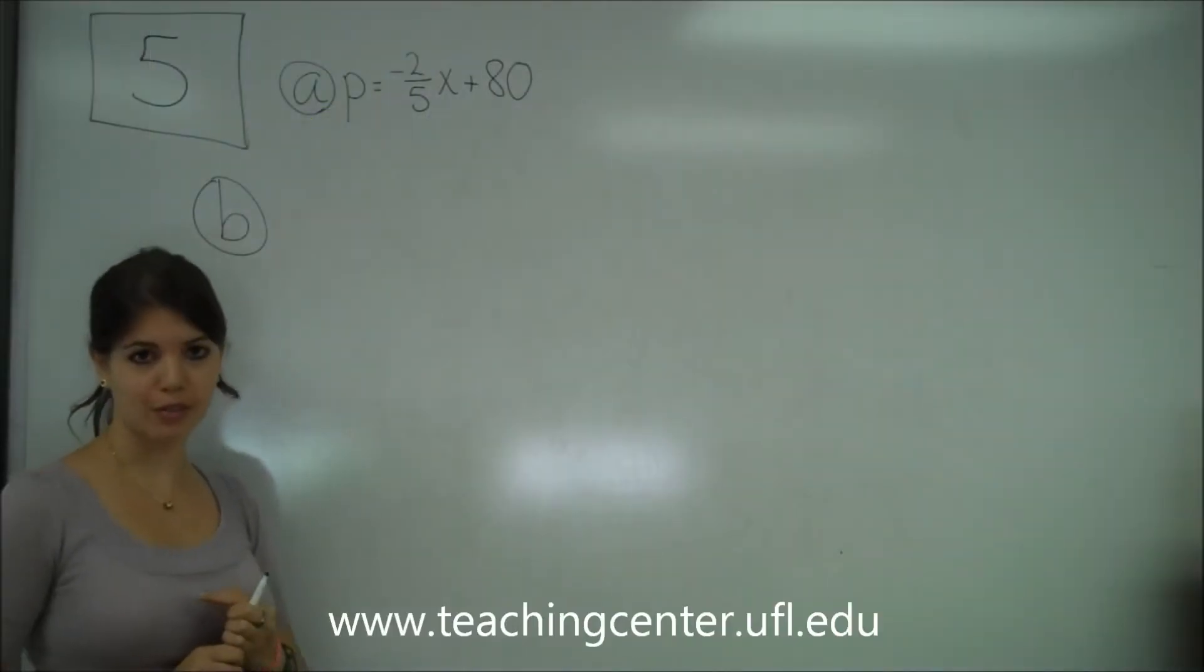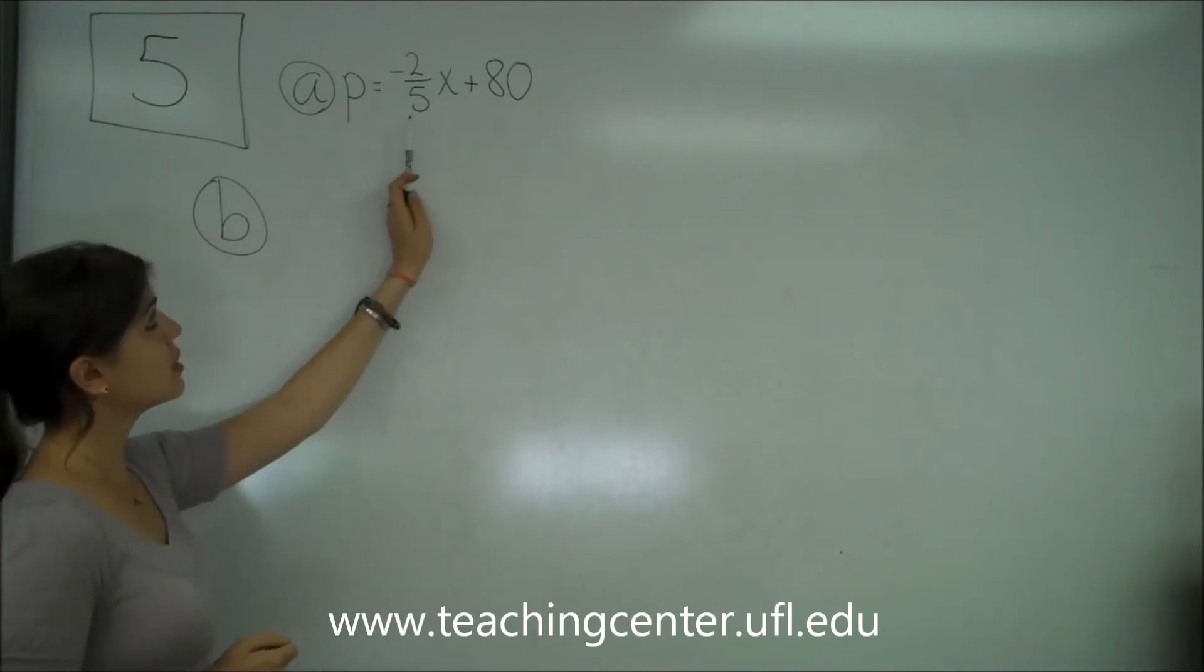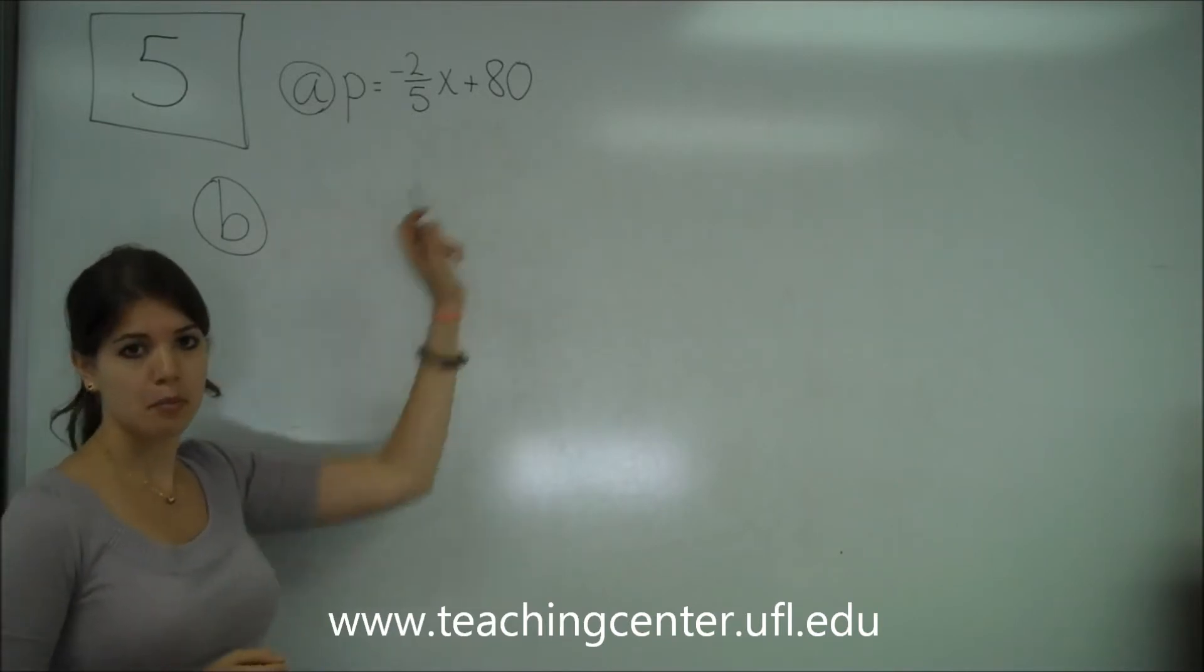Okay, this is question number 5 on the free response. Part A was P equals negative 2 fifths X plus 80.